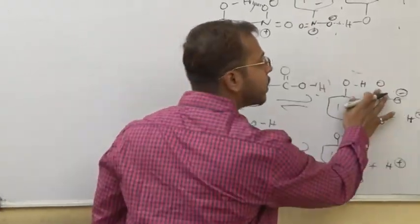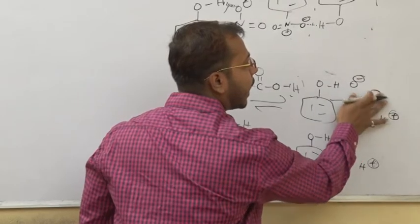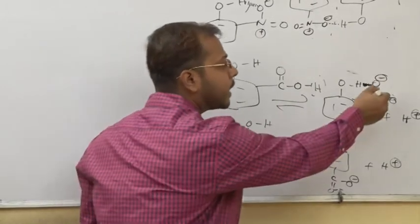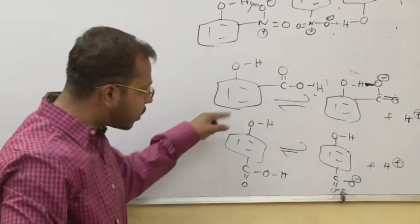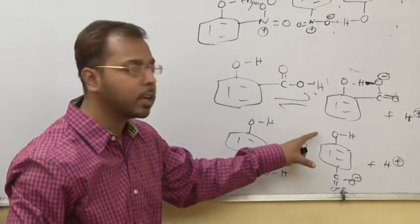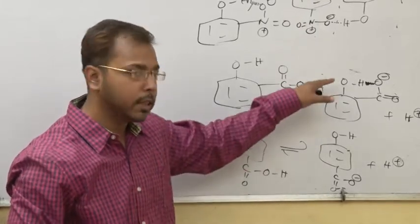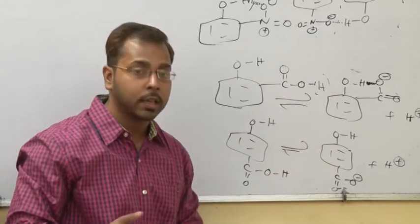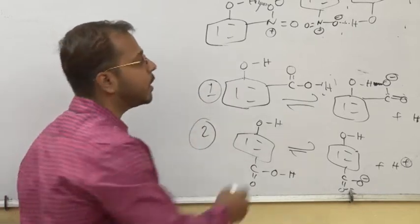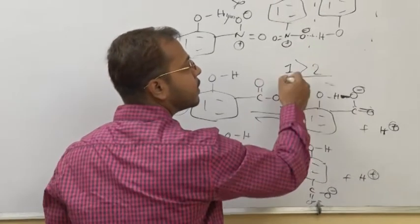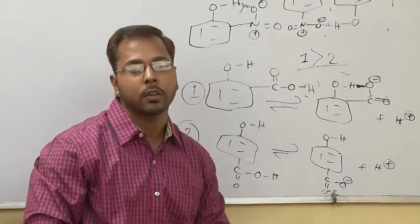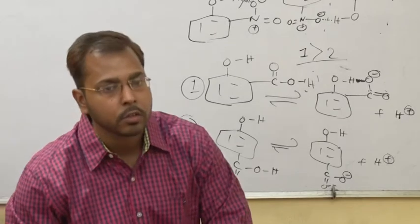So this is the conjugate base of salicylic acid and this is the conjugate base of para-hydroxy benzoic acid. The conjugate base of salicylic acid is more stable because it can form an intramolecular hydrogen bond. In the case of para-hydroxy benzoic acid, this type of hydrogen bonding cannot take place, so its stability is lower. Therefore salicylic acid (compound 1) is more acidic than para-hydroxy benzoic acid (compound 2). More acid-base related questions will be discussed in later videos. Thank you for watching — please subscribe and like.